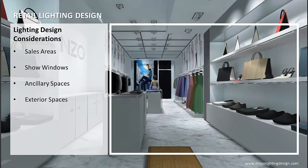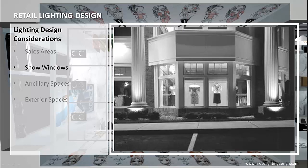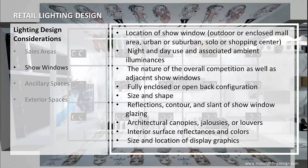The show window should be a powerful attractor, providing the link between the potential customer passing by and the merchandise within the store. Show window lighting should be brighter than the ambient conditions to attract attention and to minimize the impact of reflections that can obscure the merchandise being shown. If daylight is a consideration, sun angles and shadows are important to address.